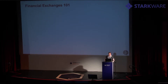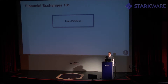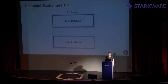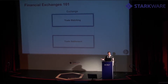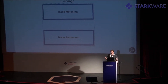On a very high level, financial exchanges 101: an exchange is built out of two components. We have a trade matching system and we have a trade settlement system. This really is the exchange in a very simplified manner. As Martin's talk previously explained, how to do this without a central entity, which is really amazing.